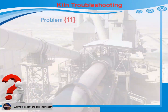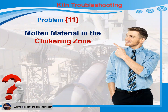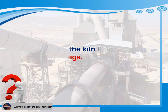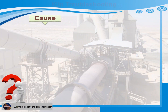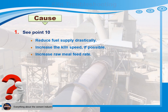Problem 11: Molten material in the clinkering zone — material lies in the kiln like a sausage. Cause 1: See problem 10. Recommendations for action: 1) Reduce fuel supply drastically. 2) Increase the kiln speed if possible. 3) Increase raw meal feed rate.